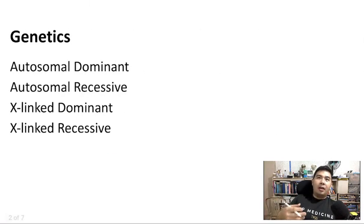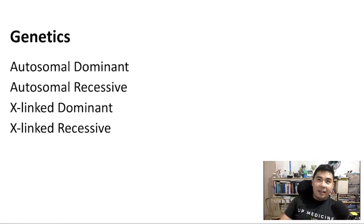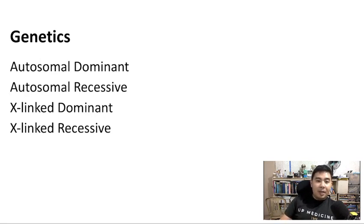So there are four main types of modes of inheritance that you'll probably see in multiple choice options: autosomal dominant, autosomal recessive, X-linked dominant, and X-linked recessive.